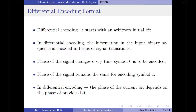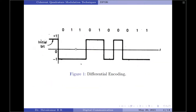Before moving on to the transmitter of DPSK, let me explain a little bit about what differential encoding is. Differential encoding is one of the signaling formats that starts with an arbitrary initial bit. Here we have an example illustration for differential encoding; I have considered bit 1, or a positive level, as the initial bit.